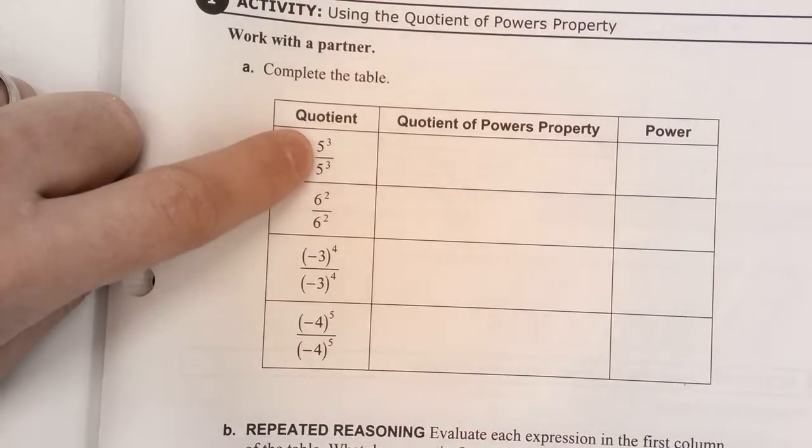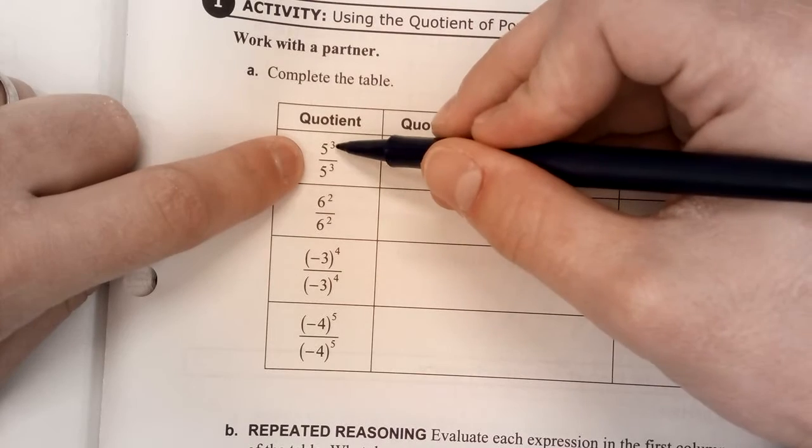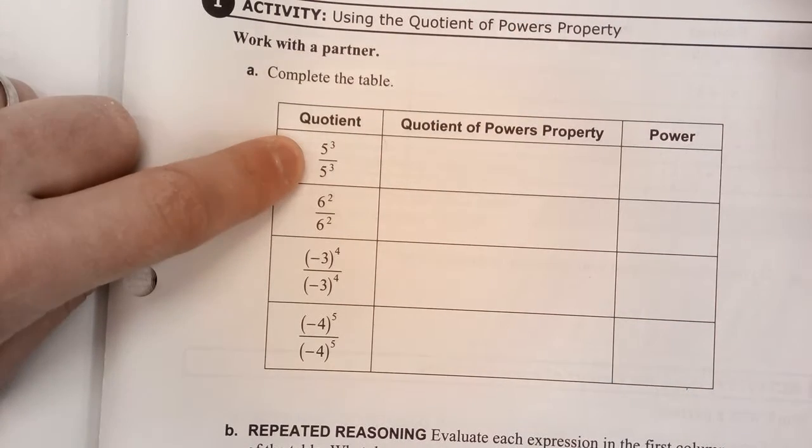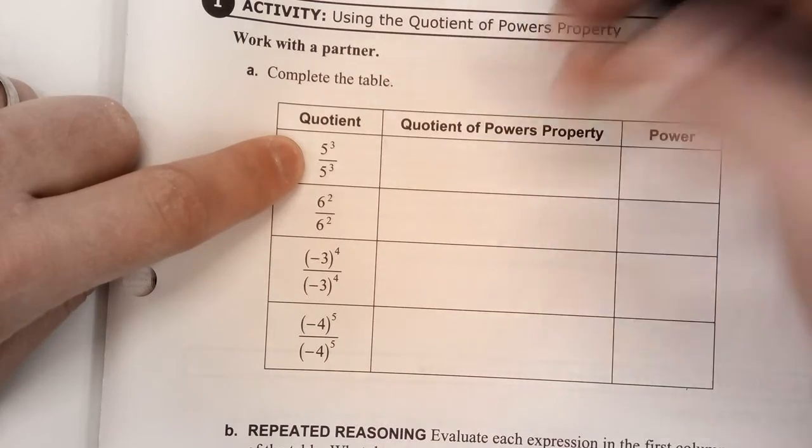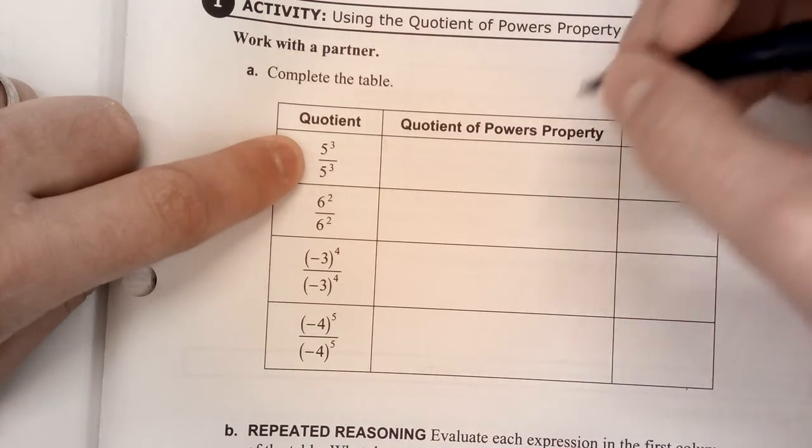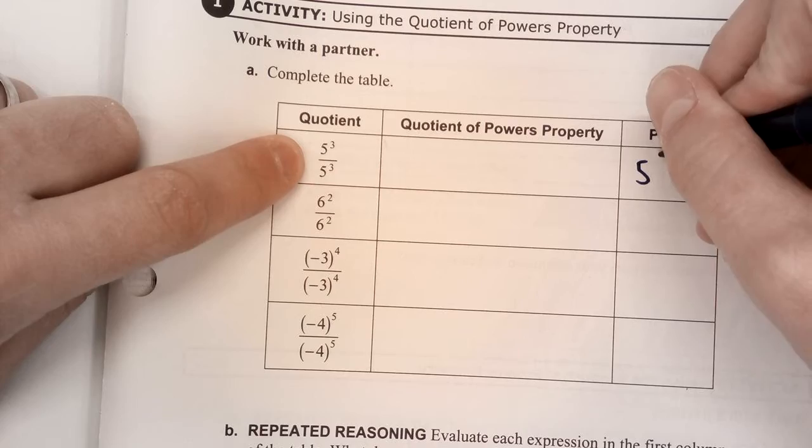this is, I need to subtract the exponents then. Powers with the same base, let's subtract. That's 3 minus 3 is 0. This is the same thing as 5 to the zero power.